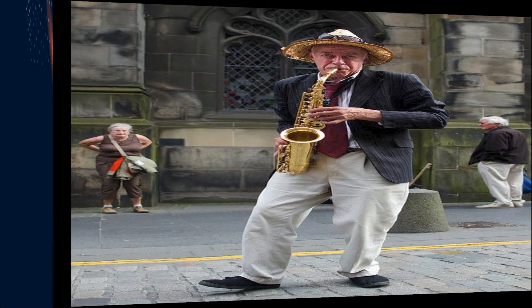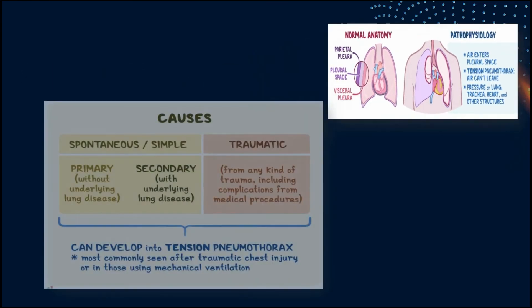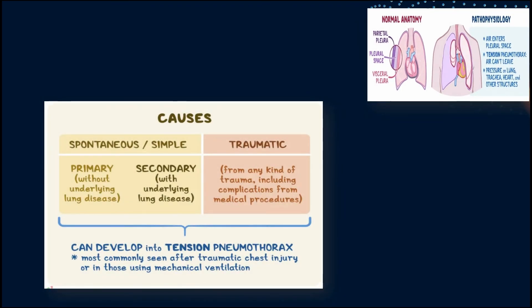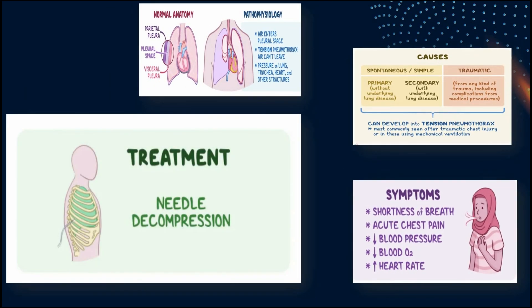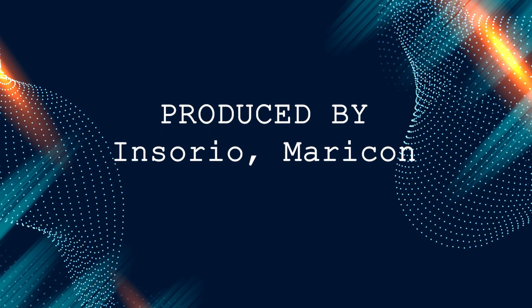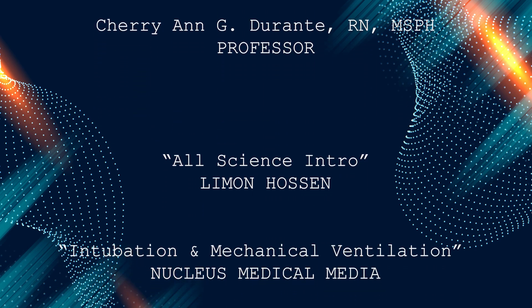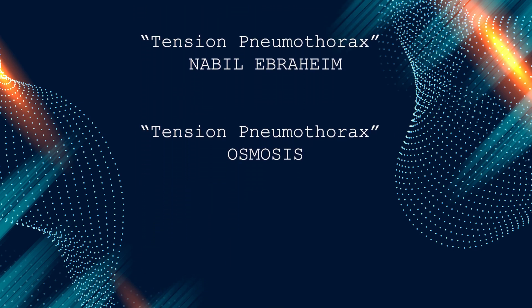To summarize, tension pneumothorax happens when air enters the pleural space but cannot leave, putting pressure on the lungs, trachea, heart, and other structures. It can be caused by lung diseases or any physical traumatic injury. Symptoms are shortness of breath, acute chest pain, decreased blood pressure, and increased heart rate. Treatment is needle decompression. I hope you learned a thing about tension pneumothorax. Thank you and God bless.